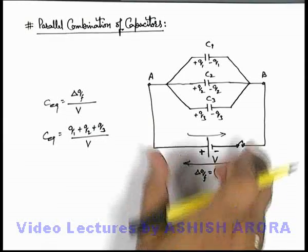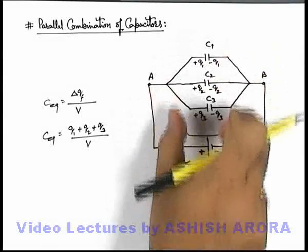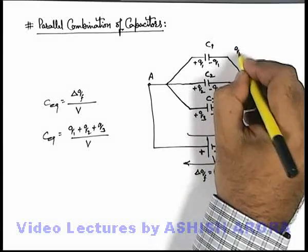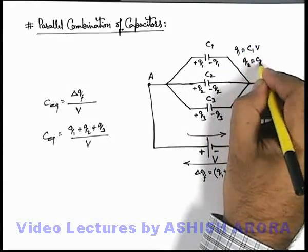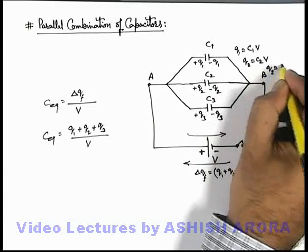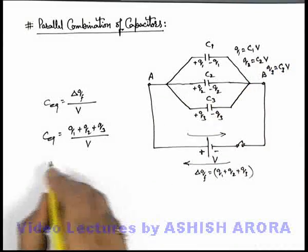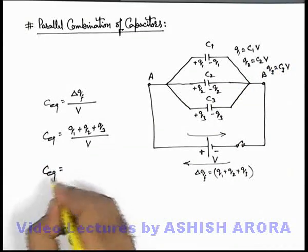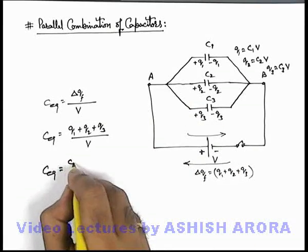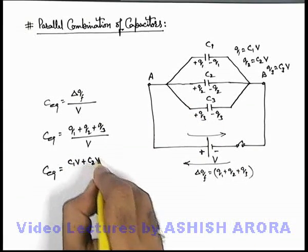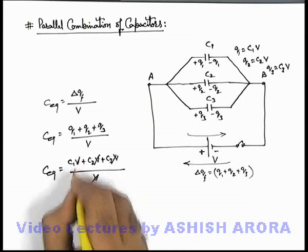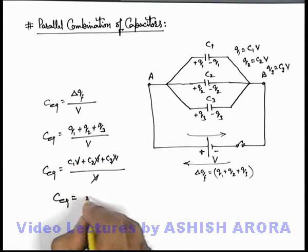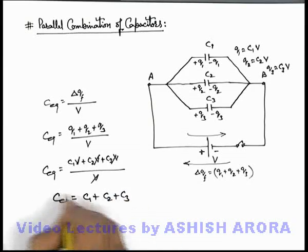And here as V is the potential difference across each of these capacitors, we can directly write the value of q1 which is C1V in steady state. Q2 is C2V and q3 is C3V. If we substitute the values, we can see the equivalent capacitance will be C1V plus C2V plus C3V by V. Here V gets cancelled out and the equivalent capacitance we are getting is C1 plus C2 plus C3.